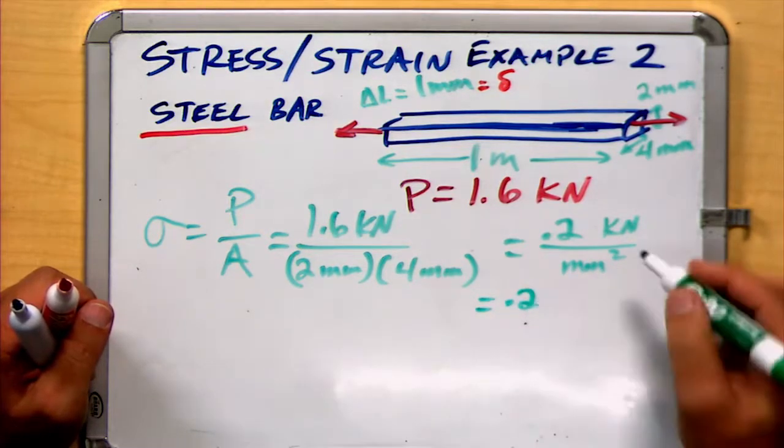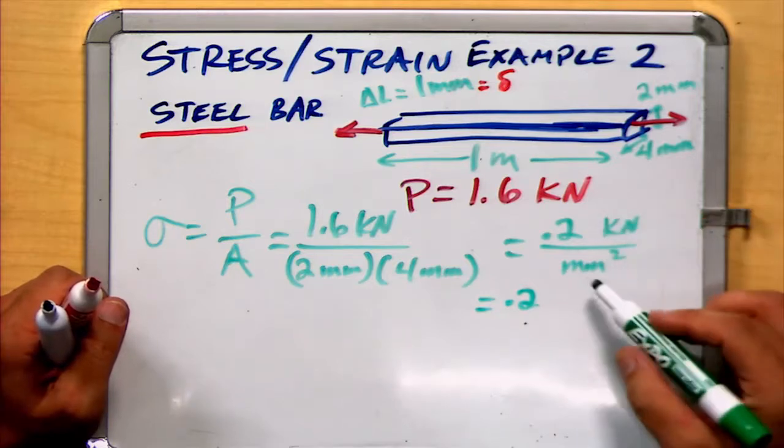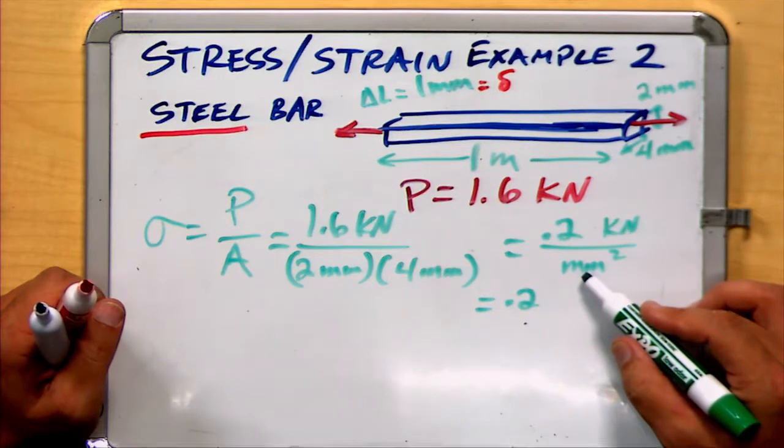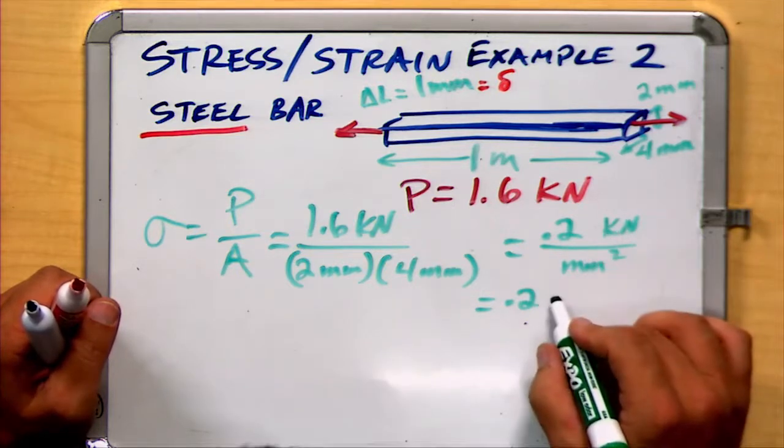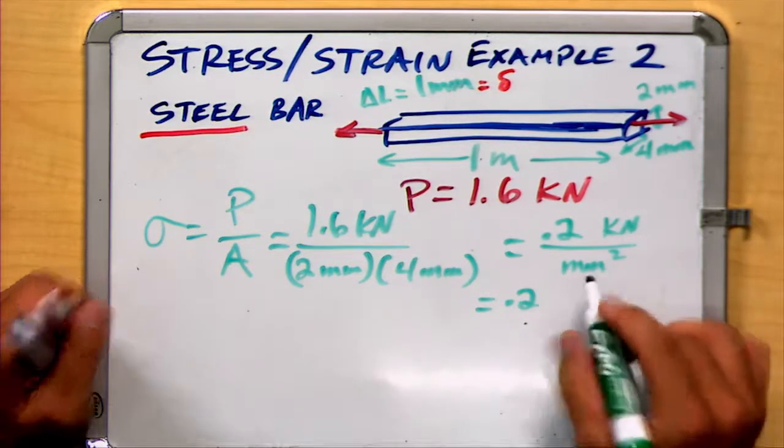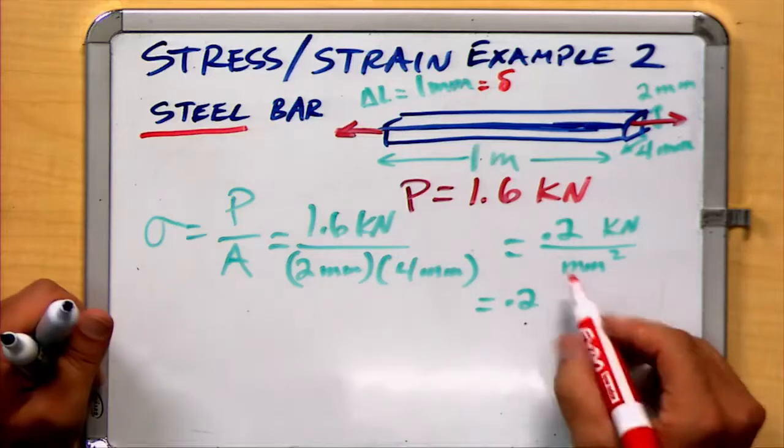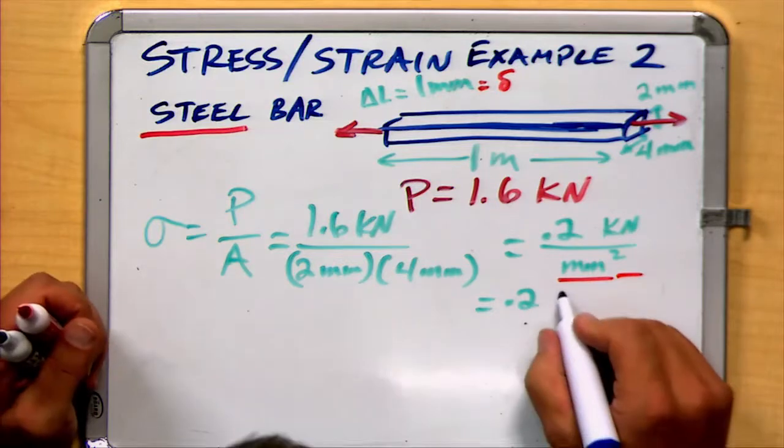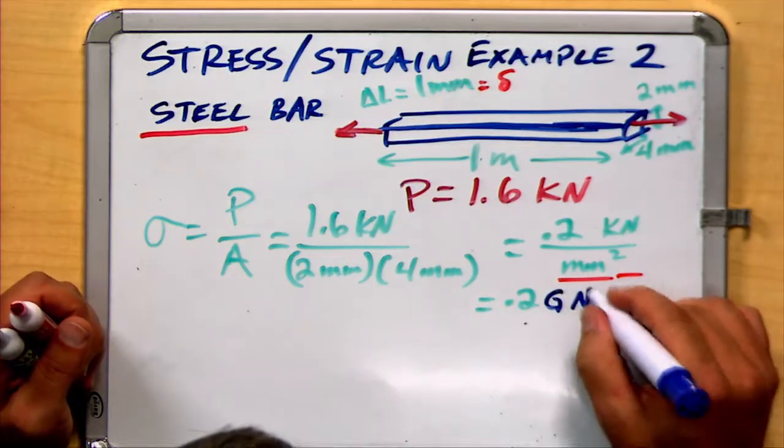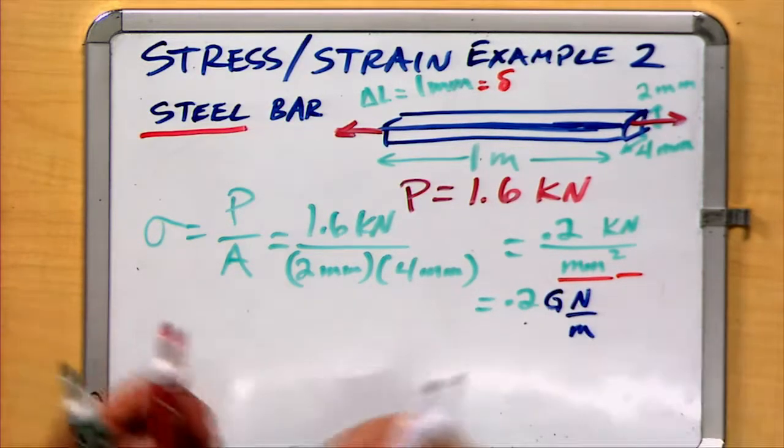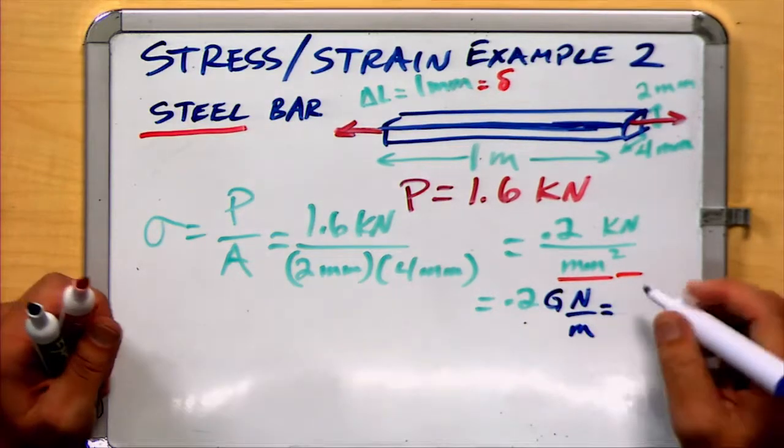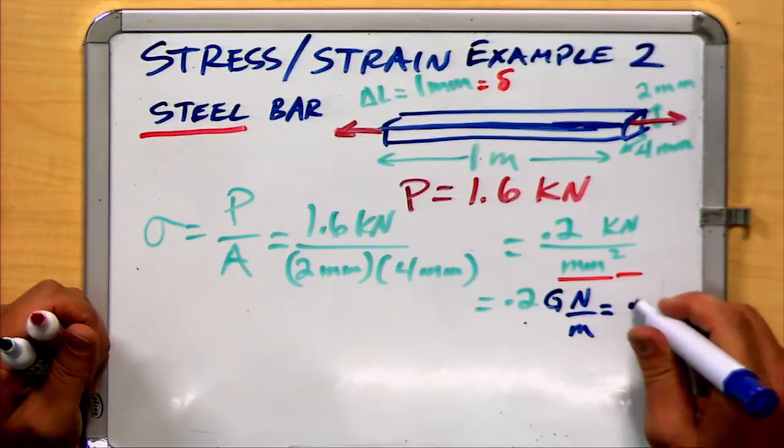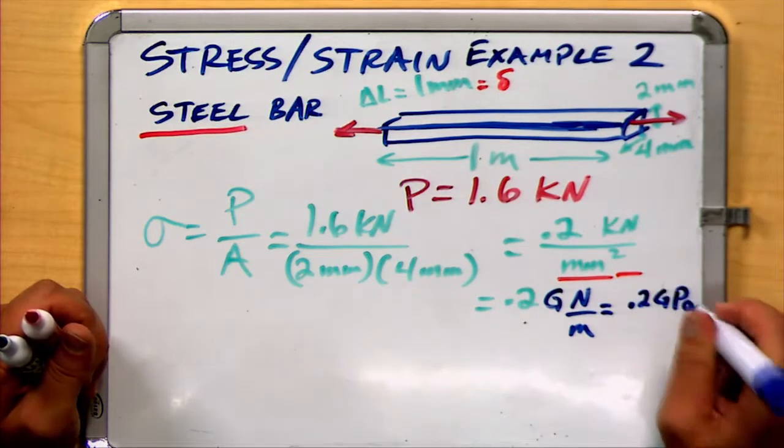Let's sort of change those units. 0.2. In this case, kilo is 1,000. Millimeter is per 1,000. So in this case, we take kilo times 1,000, times 1,000 again for each of the millimeters, times 1,000 and times 1,000 again. And we can get giga newtons per meter. Well, a newton per meter is also a unit of pressure known as a pascal, 0.2 gigapascals.